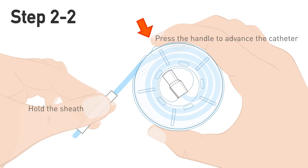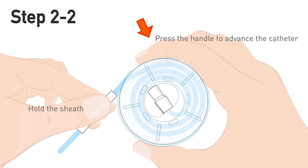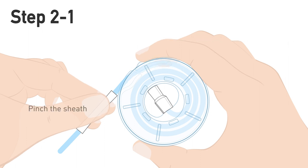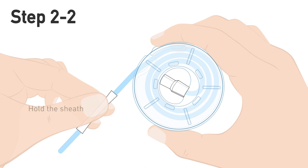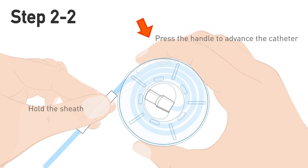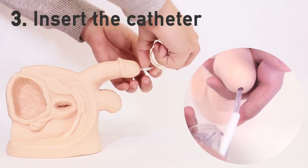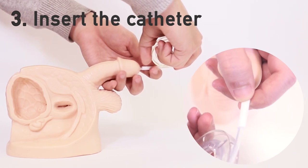Advance the catheter by pressing down on the handle. Once the catheter tip is revealed, insert it into the urethra.